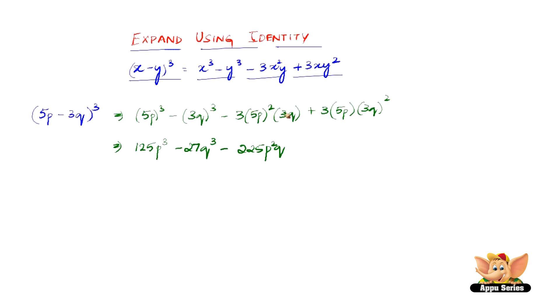The third term gives 225p²q. For the fourth term, 3² = 9, so 9 × 5 = 45, and 45 × 3 = 135 with pq².